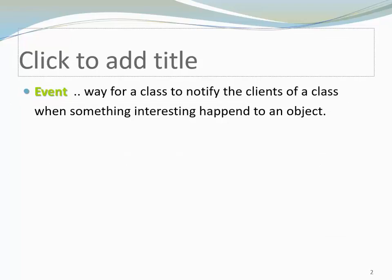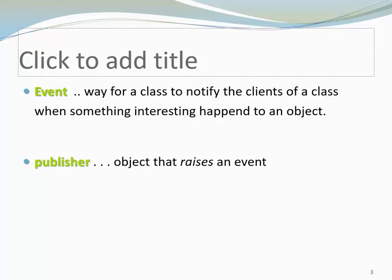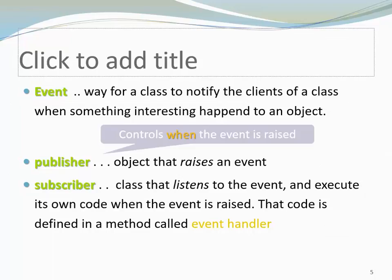We distinguish between publisher and subscriber, where the publisher is the object that raises an event and the subscriber is the class that listens to the event. The subscriber executes its own code when the event is raised. The code is defined in a method called EventHandler. The publisher controls when the event is raised. The subscriber controls how to respond.